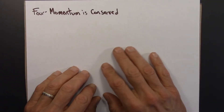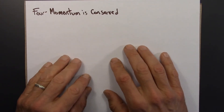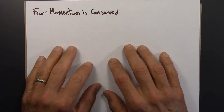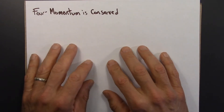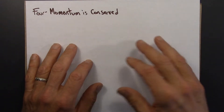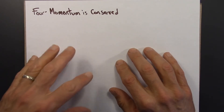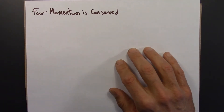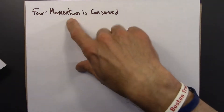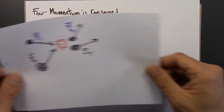In the previous two videos, we looked at some of the properties of 4-momentum. In this video, I want to return to the dilemma that we started this unit with — this question of momentum conservation. Let me say again what momentum conservation is and why it matters, and then we'll look at momentum conservation for this relativistic 4-momentum.